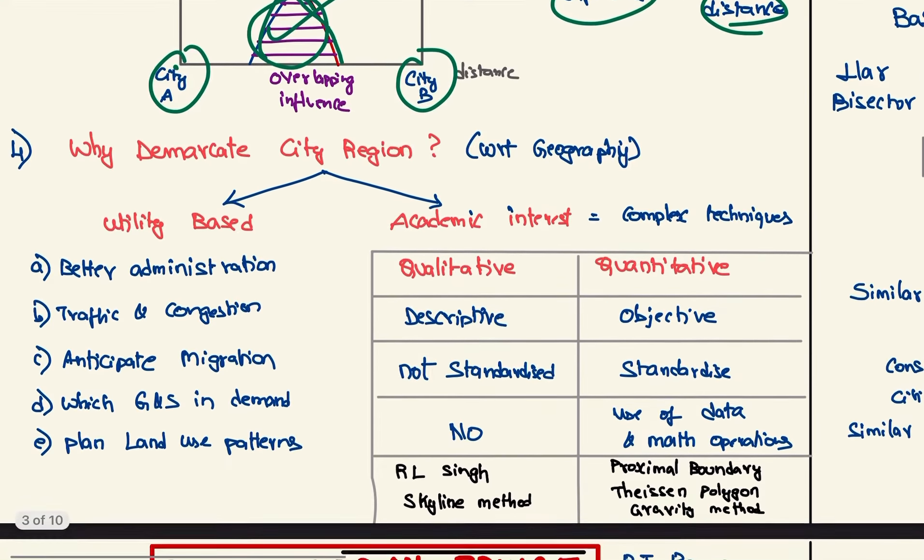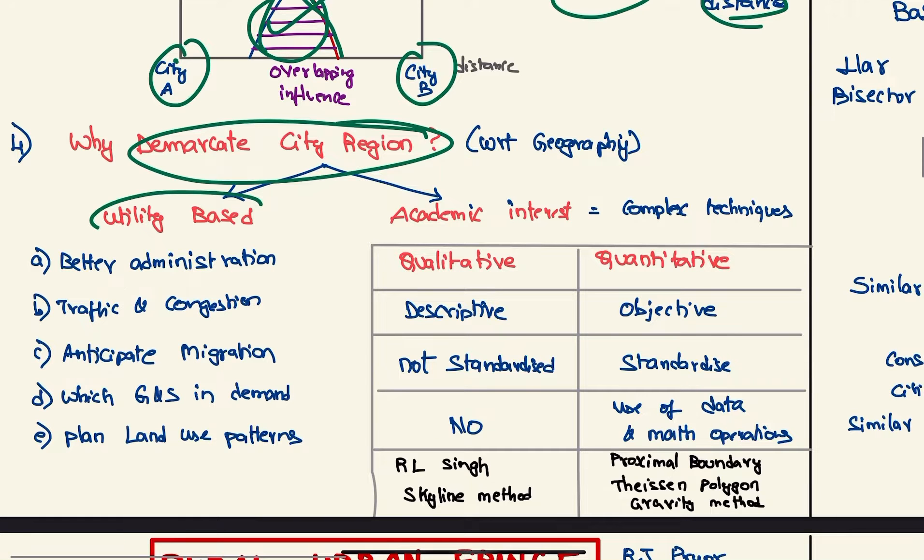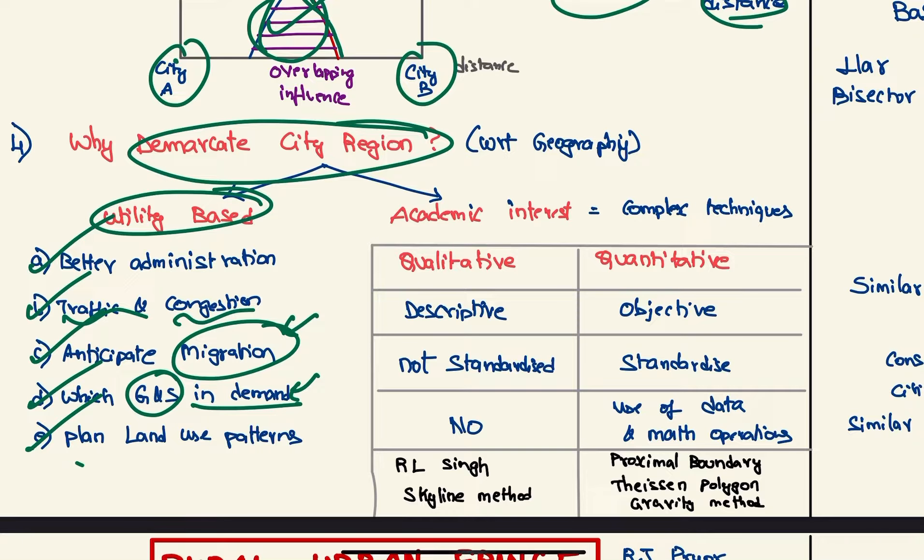So actually, why do you demarcate the city region? First one is utility-based: for better administration, for better traffic management and congestion management, to anticipate migration and make amenities for them, to know which goods and services to produce and which are in demand, and how to plan land use patterns. And second is academic interest, because complex techniques are used in geography to demarcate the city regions.